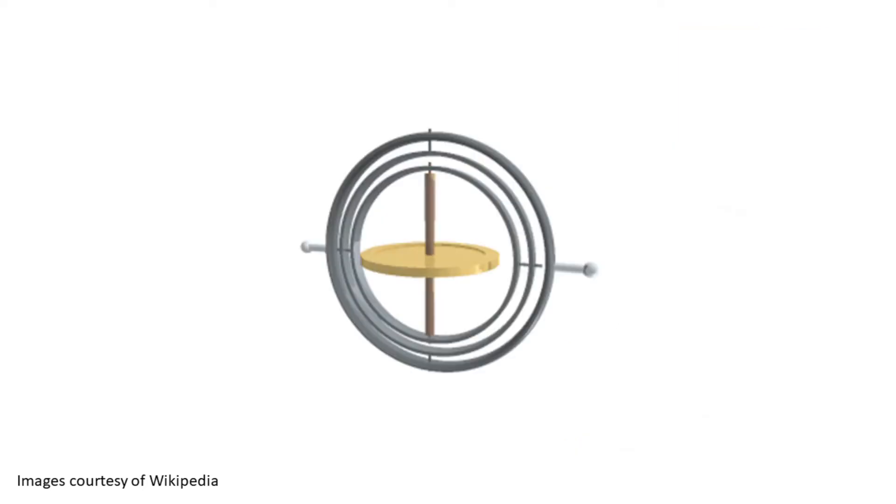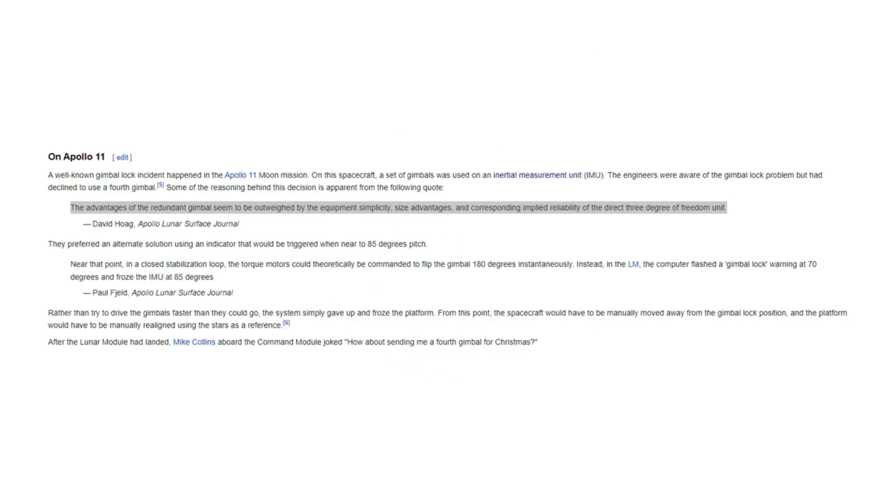There's actually a way to solve the problem of gimbal lock by adding a fourth ring that's actively kept away from the others, but the NASA engineers decided, the advantages of the redundant gimbal seems to be outweighed by the equipment's simplicity, size advantages, and corresponding implied reliability of the direct 3 degrees of freedom unit. Yeesh, these guys really were engineers.